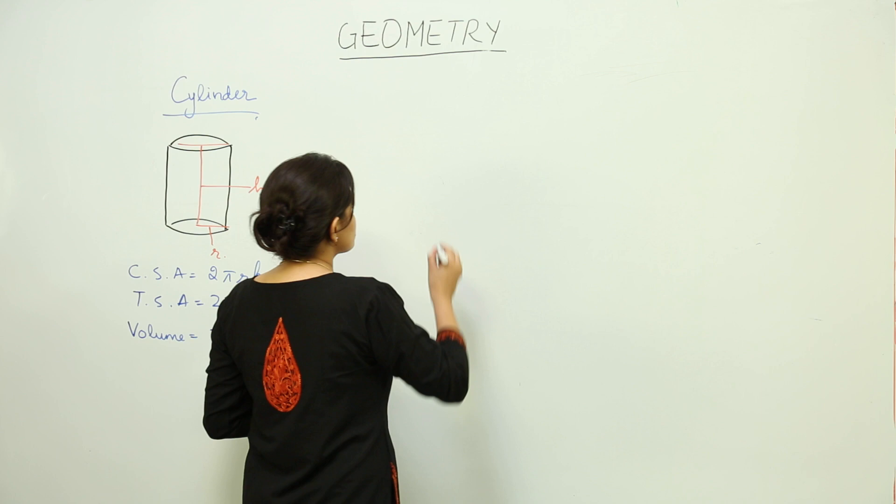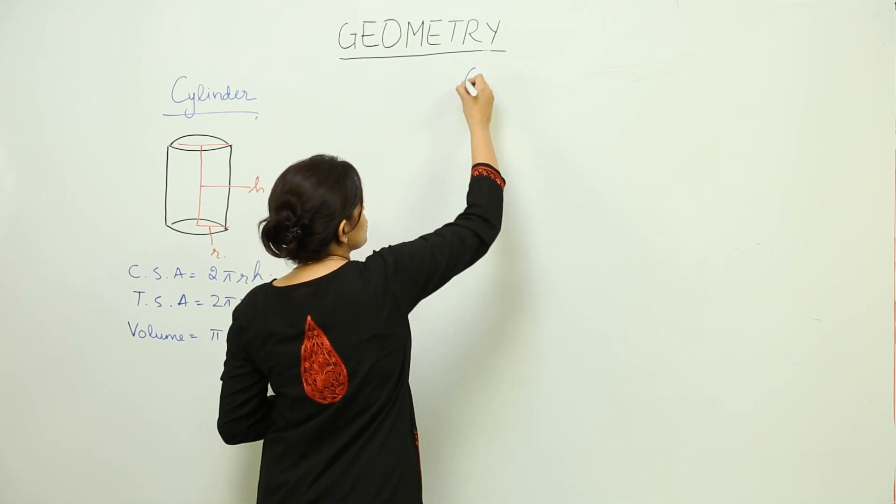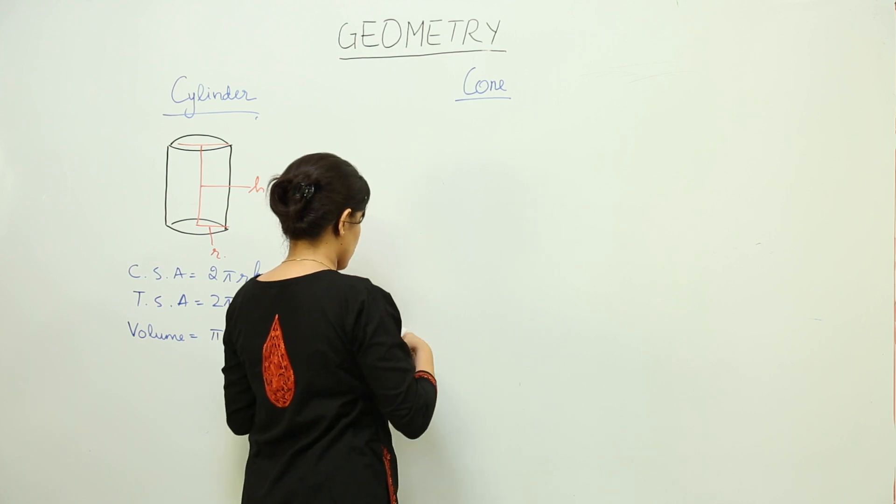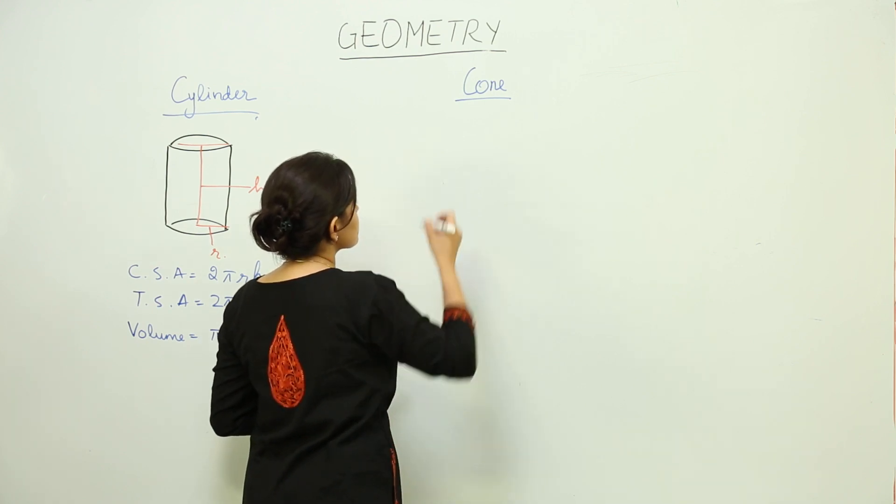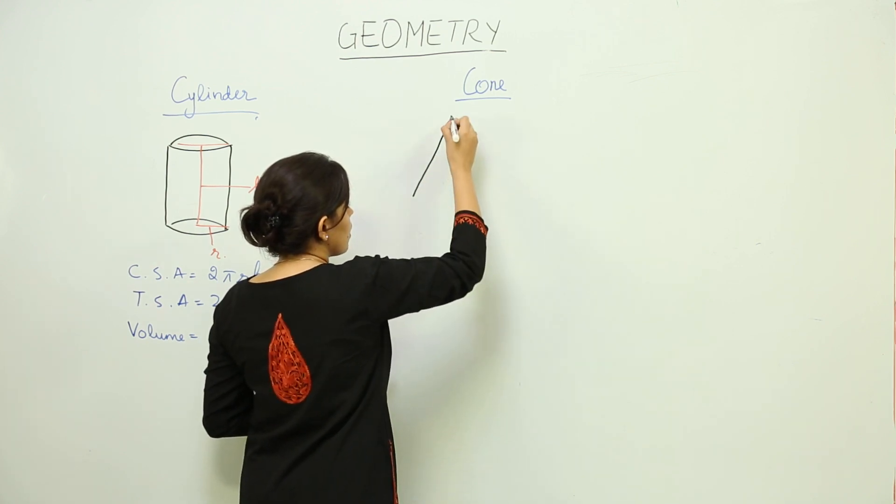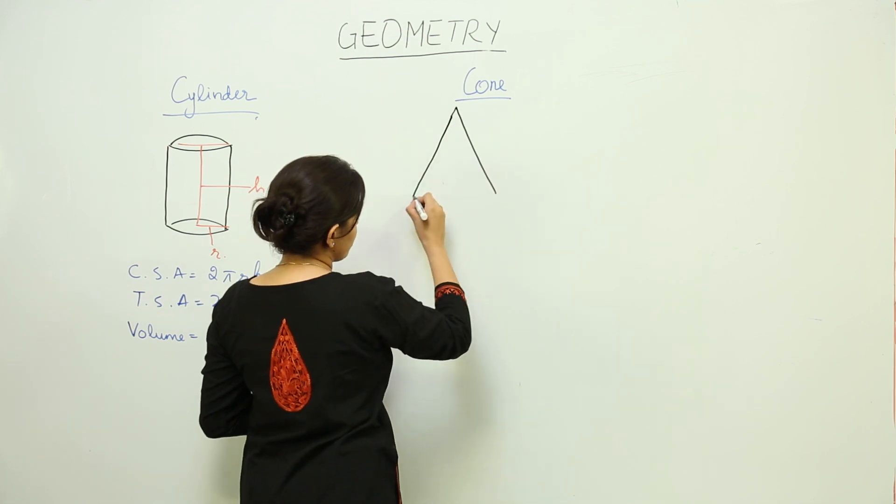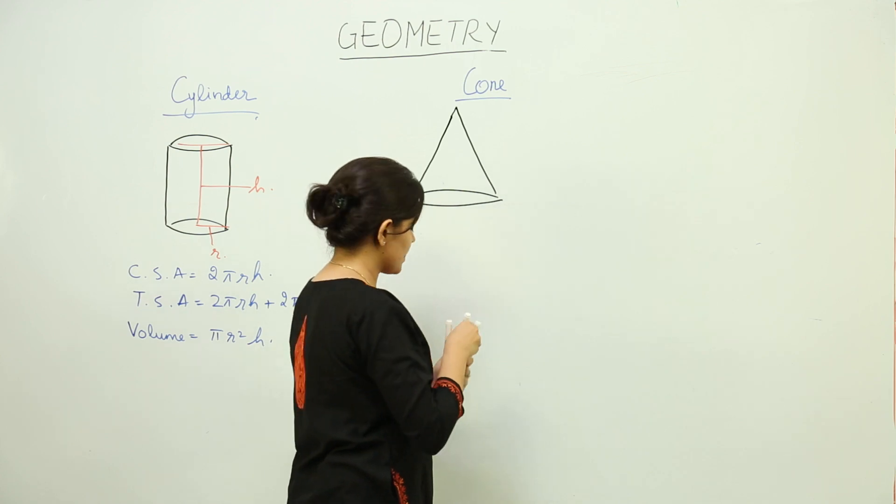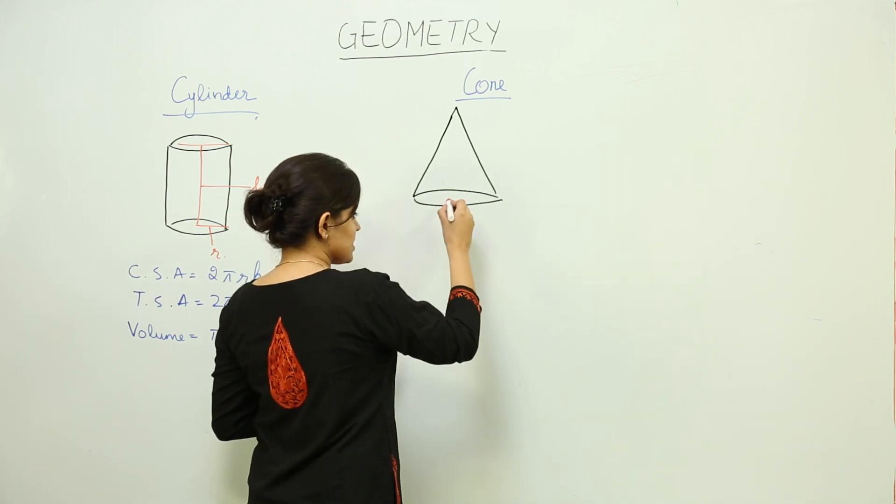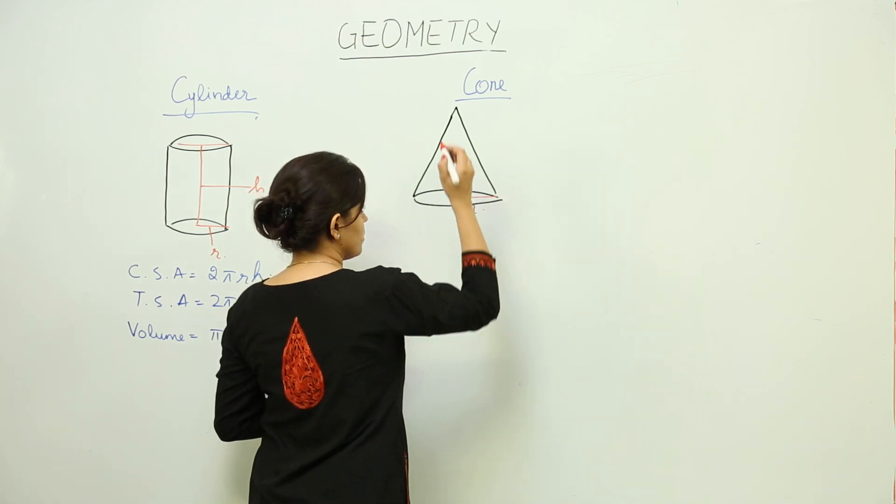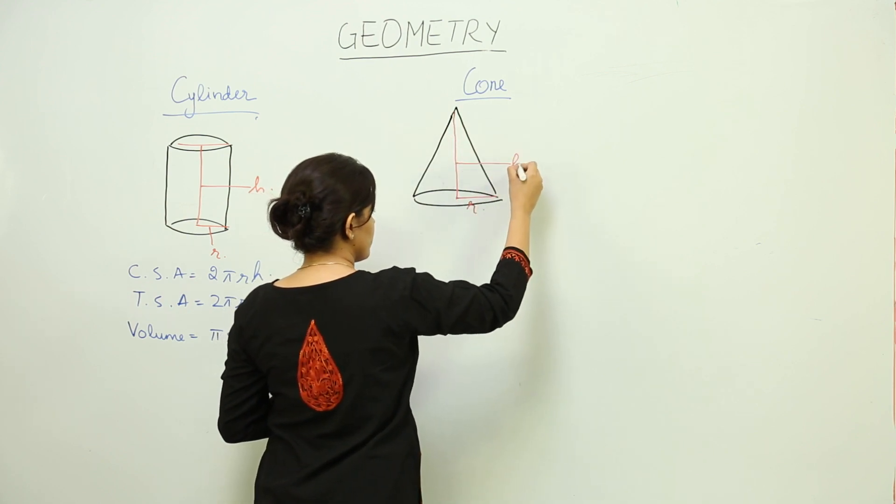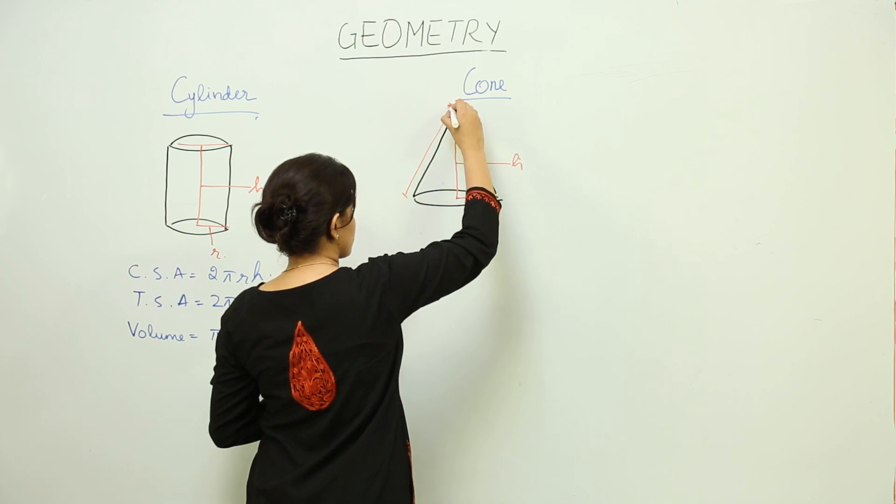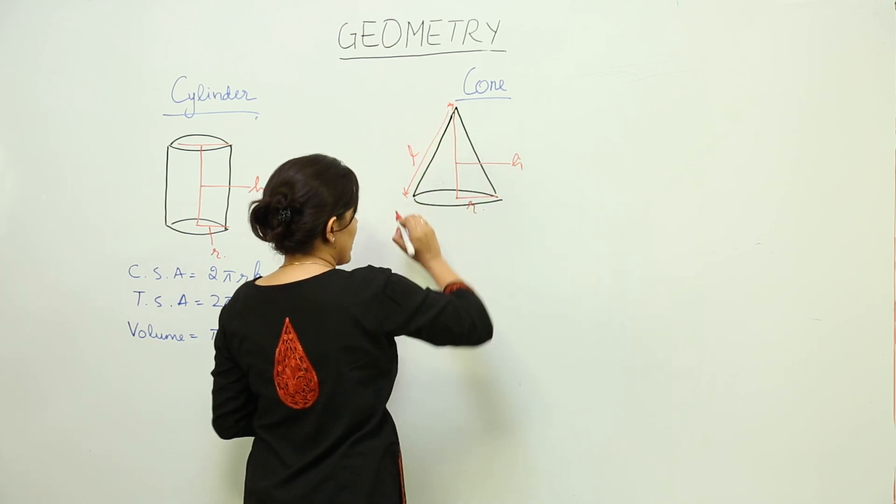Let's see the last 3D figure that we have which is known as cone. Let's first construct a cone. A cone also looks like an ice cream cone, an inverted ice cream cone or a tent for that matter. Let's say this is the radius of this cone. This is the height of this cone, and this is the slant height of this cone, which is depicted by L.